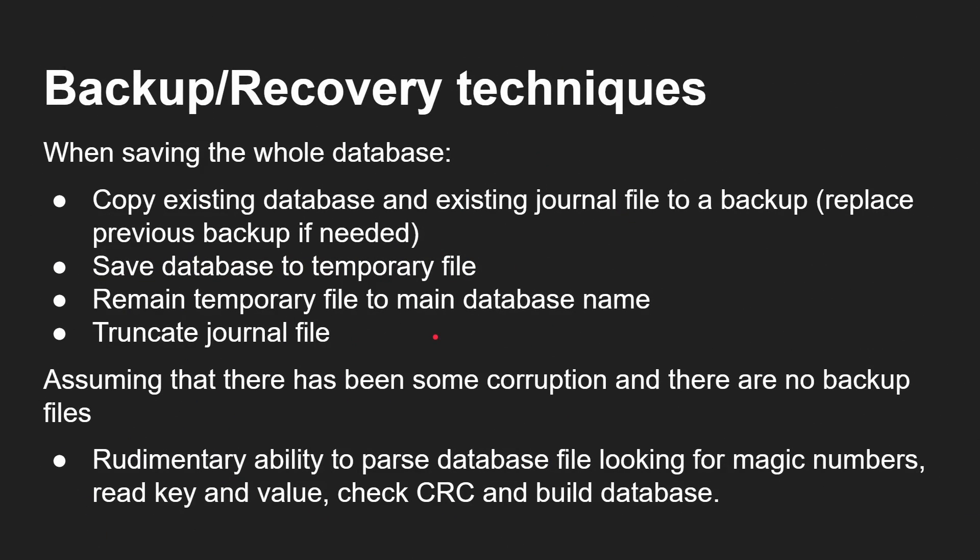When saving the whole database, you should copy the existing database and journal file to a backup, replacing the previous backup if necessary. Save the database to a temporary file, rename the temporary file, then truncate your journal file — and everything will be nice and secure. I haven't fully implemented that final step in my GitHub version yet; there is a to-do item for that. If there is corruption, there's also a rudimentary ability to parse a database file looking for magic numbers, read the key and value, check the CRC, and rebuild the database — helpful even in a worst-case scenario with fragments.